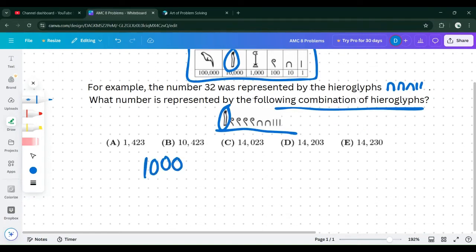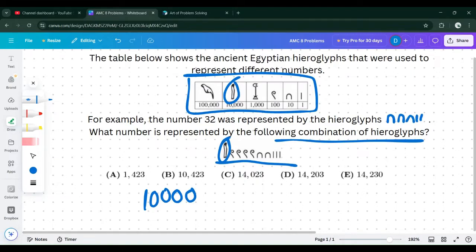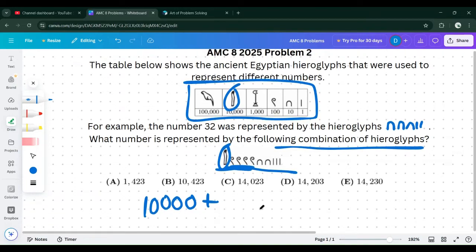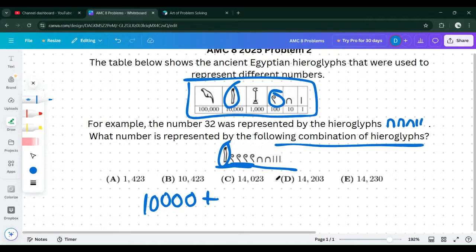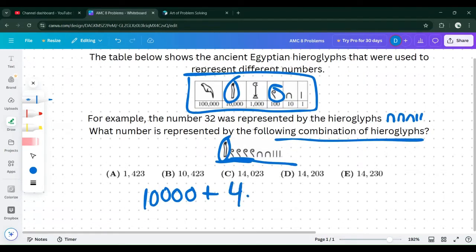We can move on to the second one. We have four of this type of hieroglyphic, which is worth $100,000 as shown in the chart. So we have four times $100,000.